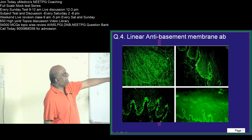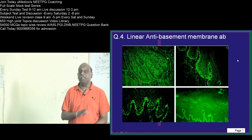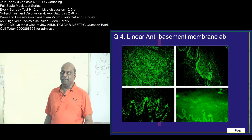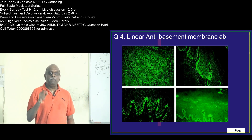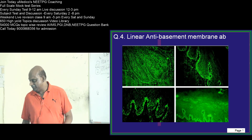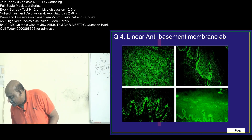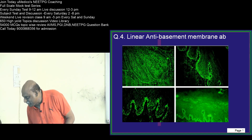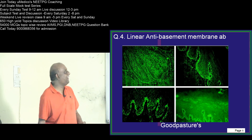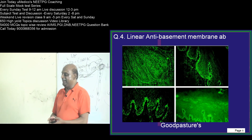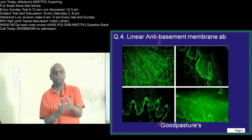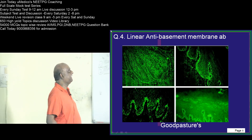Linear anti-basement membrane antibodies — you are seeing the immunofluorescence here. Now you should tell me what it is pathognomonic of, and in which condition you find it. Shoot the answer. Chandrakhan says SLE. Shah Huzafi is saying dermatitis herpetiformis, Dipali Sharma is saying IgA nephropathy, Praveen Kumar is saying bullous pemphigoid, and Graceline is saying Goodpasture's. Give a big clap to Graceline — that's right! Graceline is our future nephrologist.